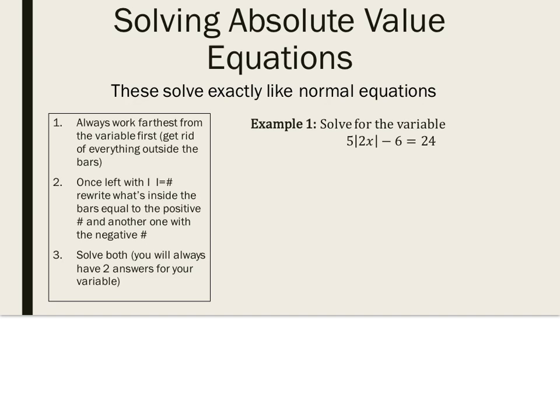The second thing is, once you're left with the absolute value bars equal a number, you're going to rewrite what's inside the bars to equal that positive number, and then rewrite it again to equal the negative number. So, let me show you what I mean.